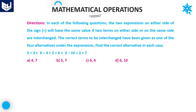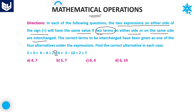Read the directions carefully and answer the questions. In each of the following questions, two expressions on either side of the sign equal to have the same value. If two terms on either side or on the same side are interchanged, the correct terms to be interchanged have been given as one of the four alternatives under the expressions. Find the correct alternative in each case.